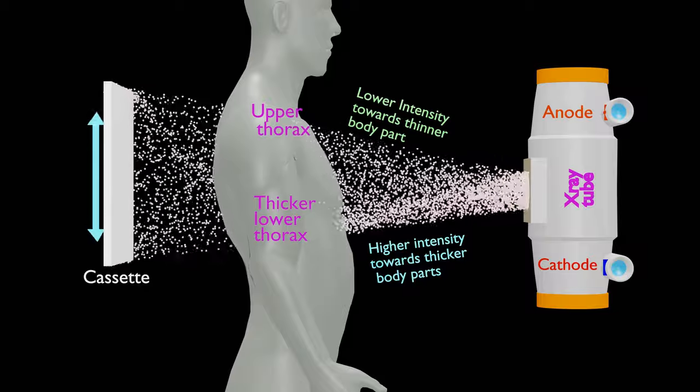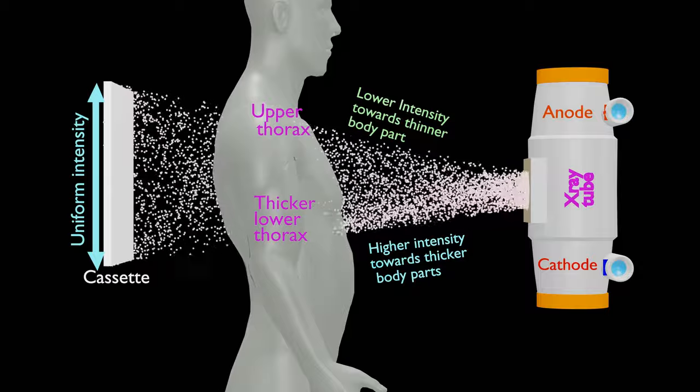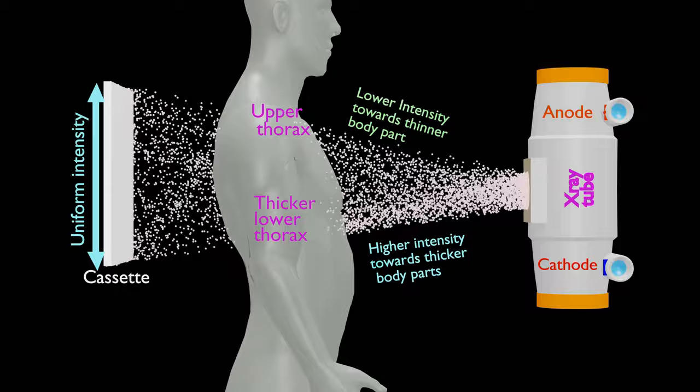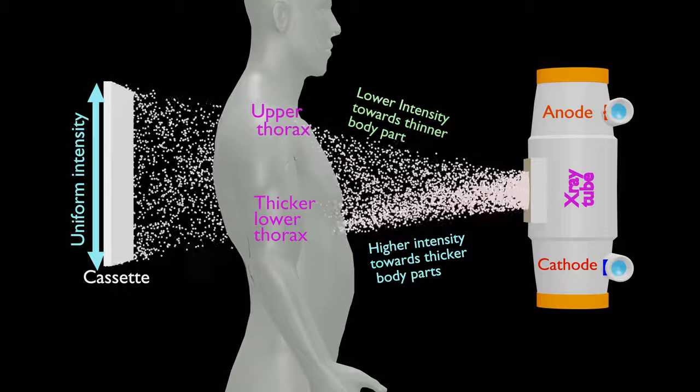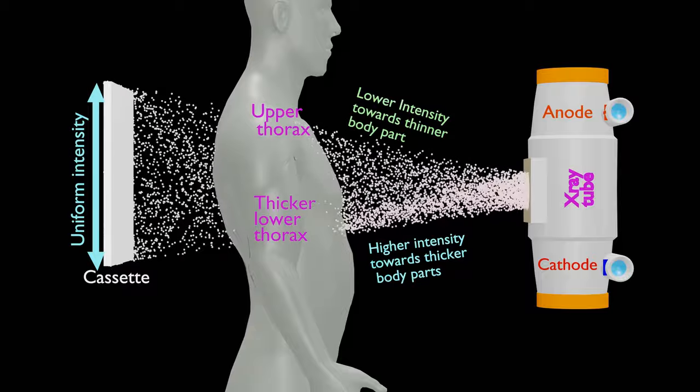A rather uniform exposure to film will produce better image. As you know, films are sensitive to a limited range of exposures as per H and D curve. So, the difference in x-ray beam intensity which could have caused noise in a radiograph is countered by anatomy differences.